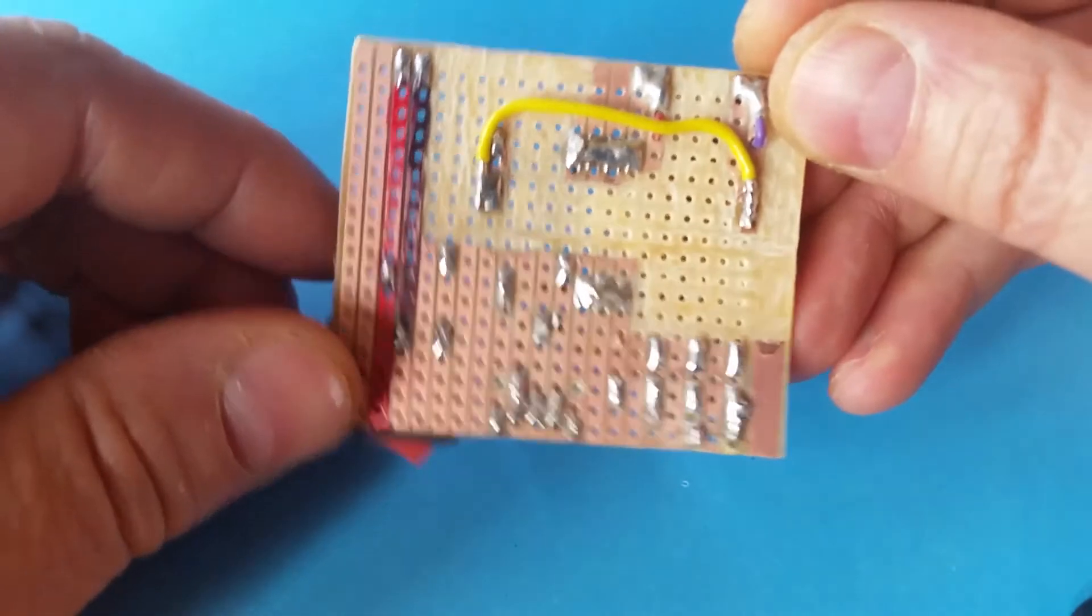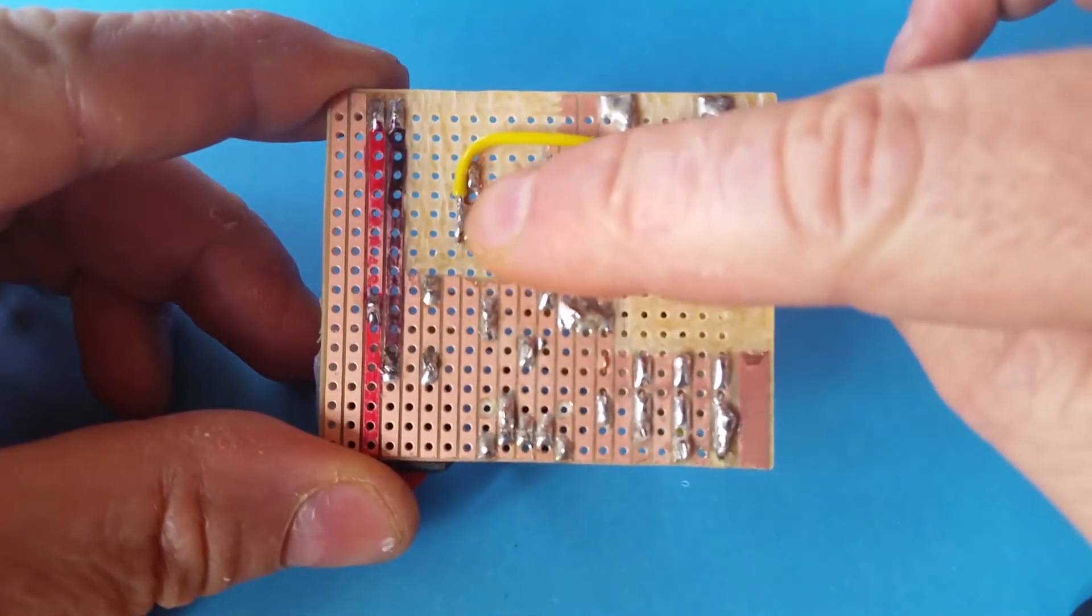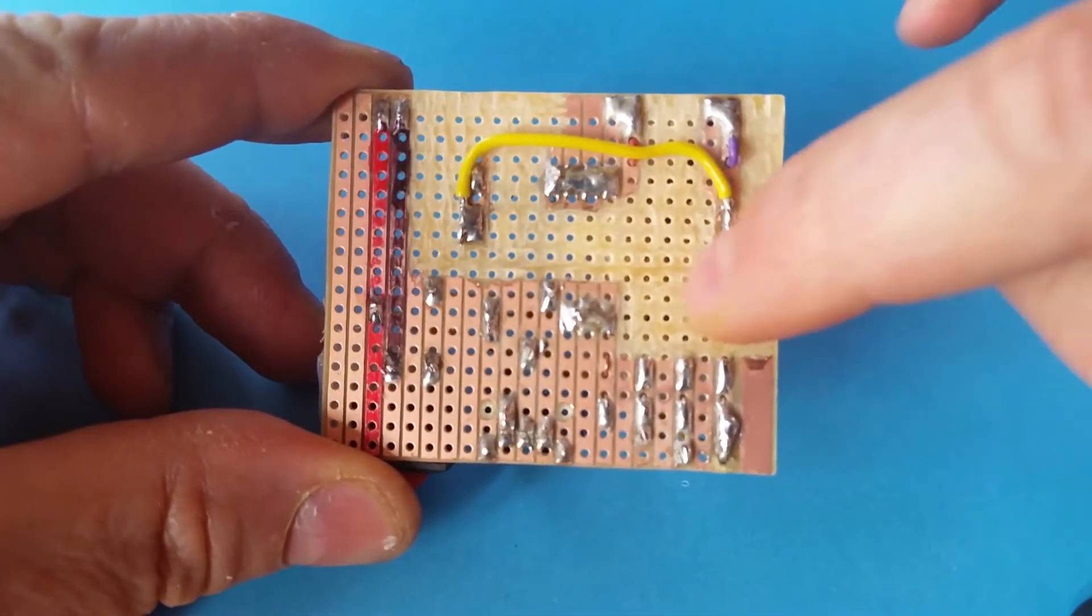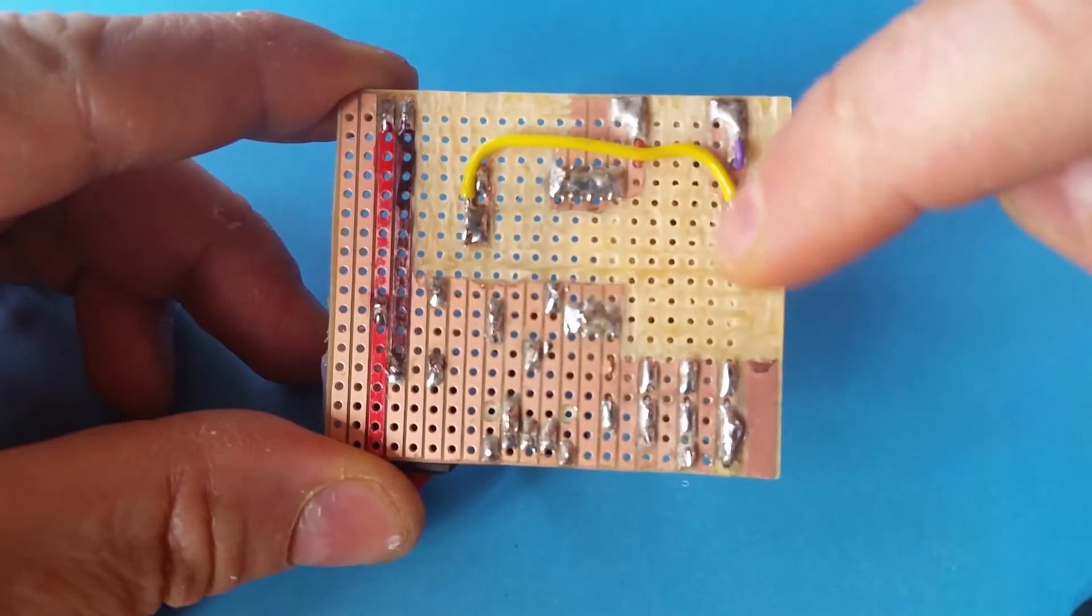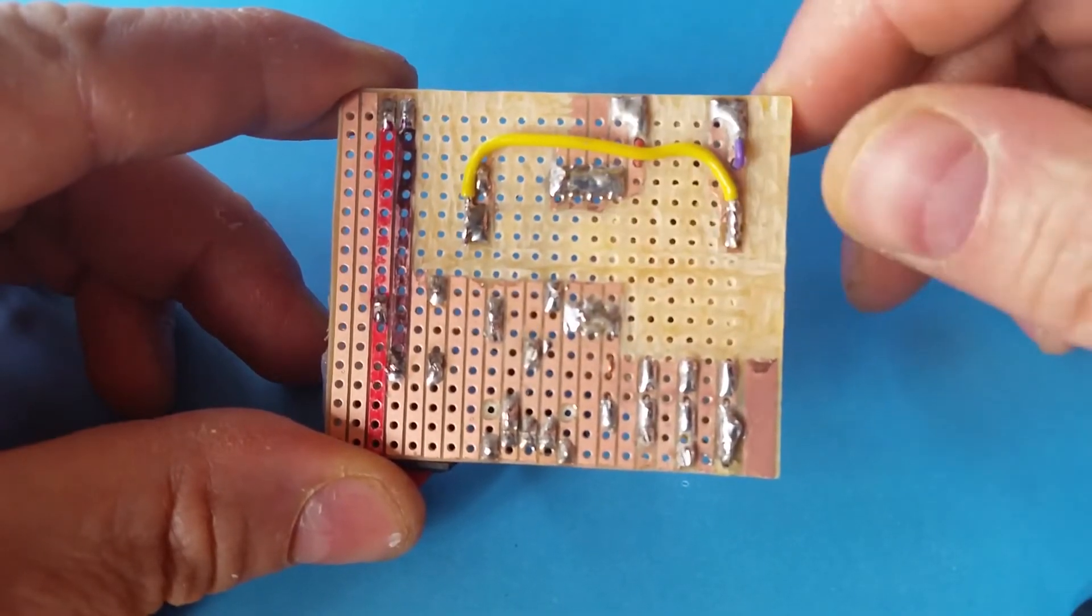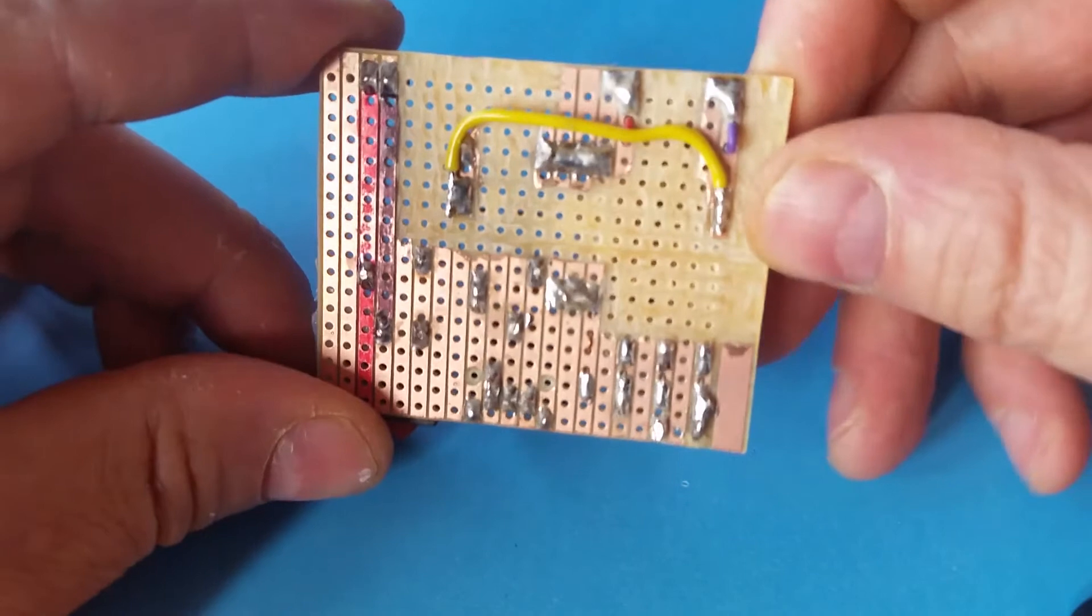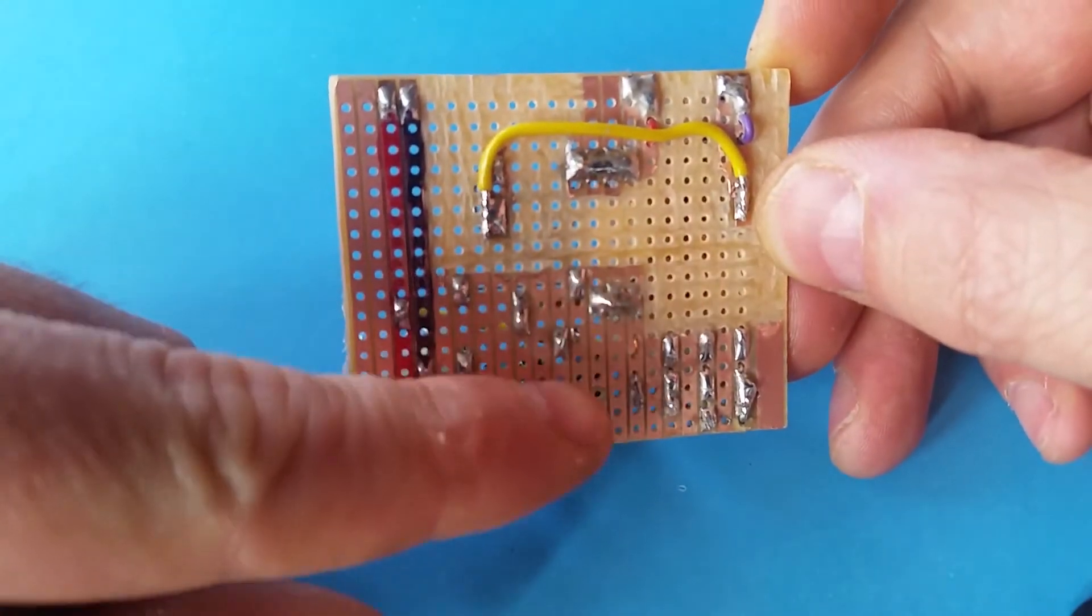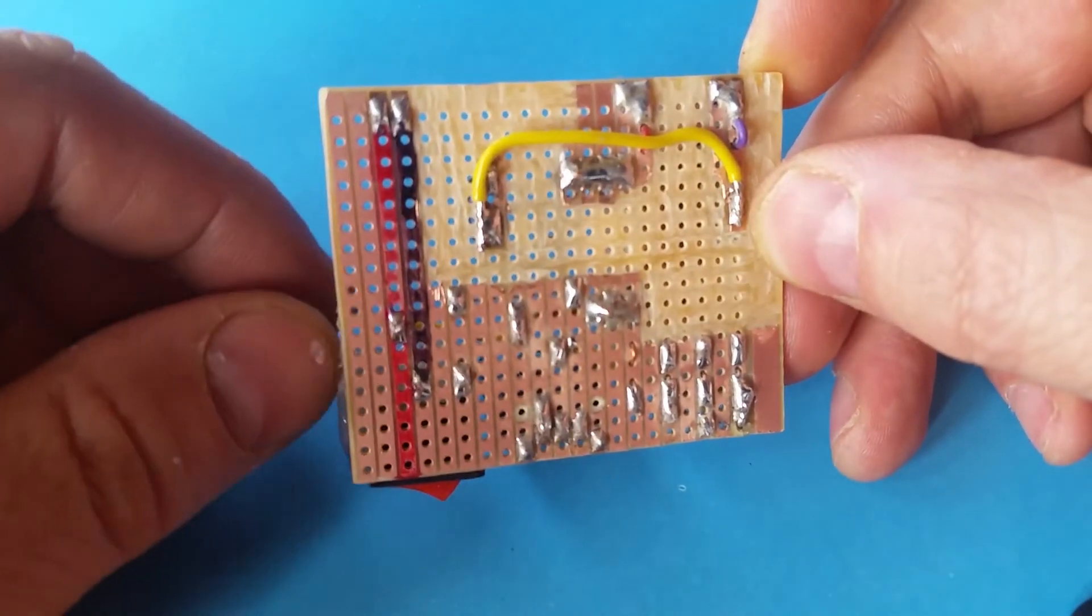When you come to put it together you've got to be careful because if you're using a strip board you need to take away most of the strip board around the high voltage part of the circuit so that it doesn't arc on the back. So I separated the low voltage part over here with the high voltage part over there.